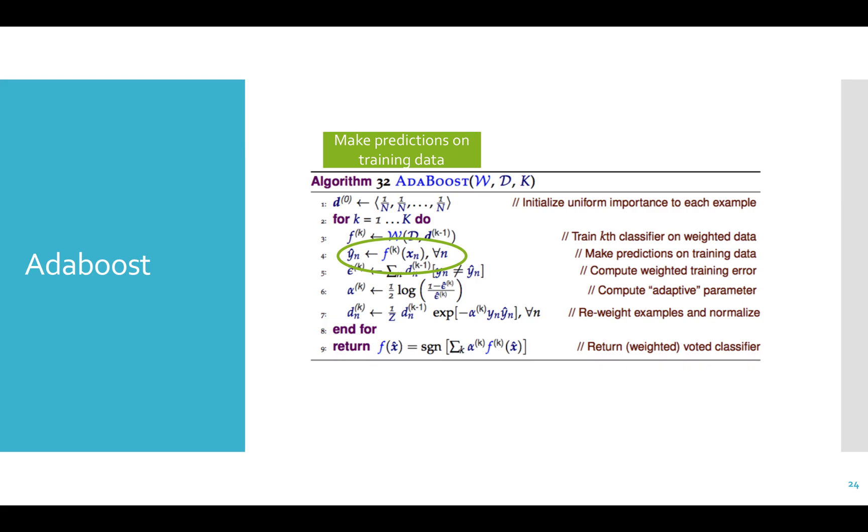Line 4, now that we have the trained model, we want to make predictions on all of the training data to see how the weak learner did. So we run every sample through the weak learning model to get predictions.